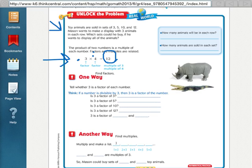Here we say toy animals are sold in sets of 3, 5, 10, and 12. So, you go to the store and you can pick out a package of toy animals. One of the packages has 3 in it, one of them has 5 in it, one of them has 10 in it, and one of them has 12 in it.